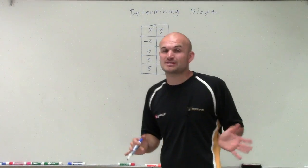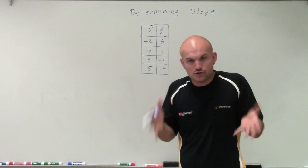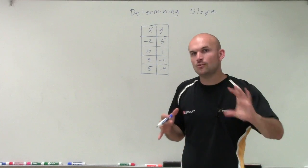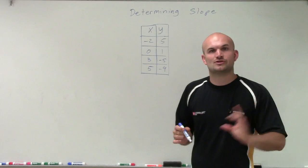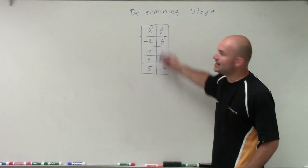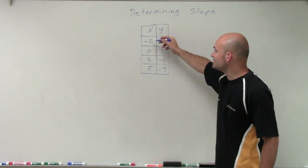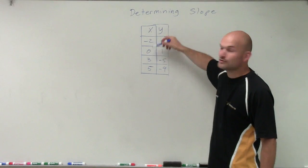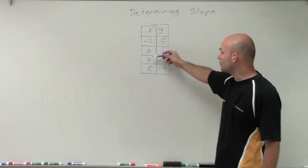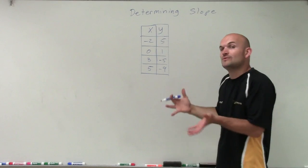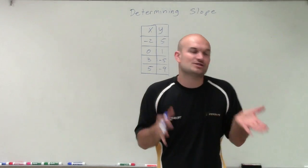But that's OK, because when we're trying to determine the slope, all we need to do is pick two values and find the change in the y-coordinates over the change in the x-coordinates. We don't need to find the change between all of them. The change doesn't have to be negative 2 and negative 1, or 0 and 1, or 3 and 4. It can be different. We just need to make sure we find the change in those two values.